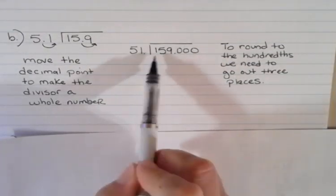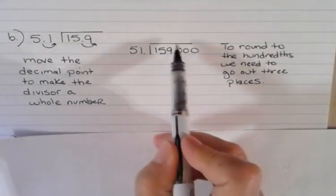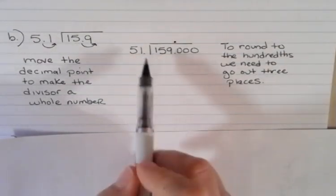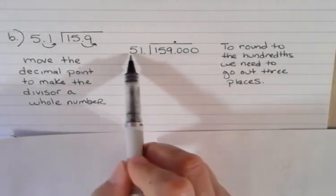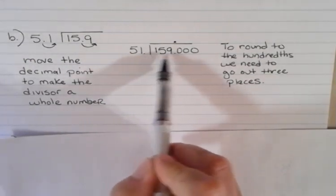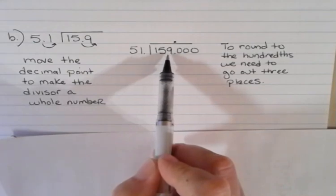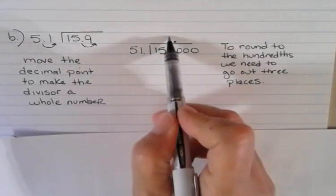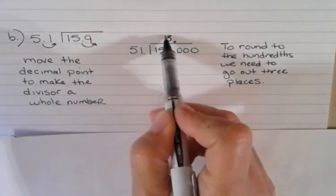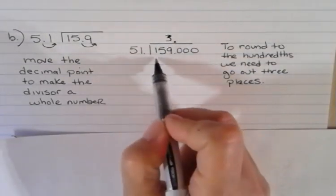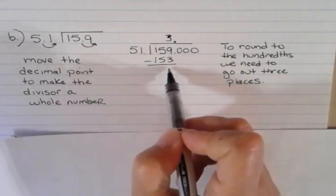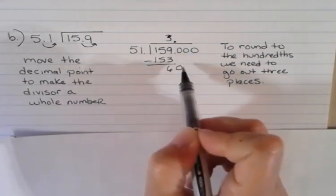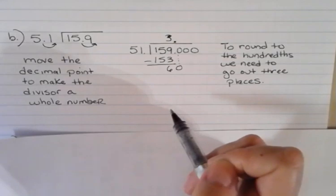I want to just remember that the decimal point is going to come straight up into my answer. I don't need to put that decimal point there, but I just did to show you where it was. 51 doesn't go into 1 or 15, but it goes into 159 three times. 3 times 51 is 153. I'm going to subtract. This is just the division that you know and love from before. I'm bringing down that next number.